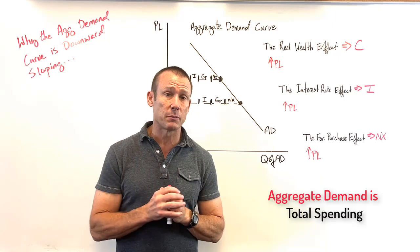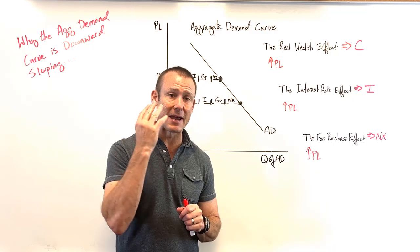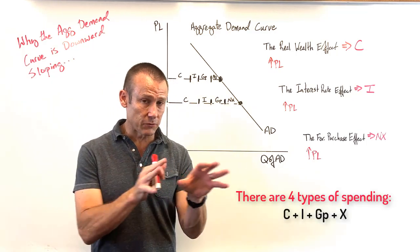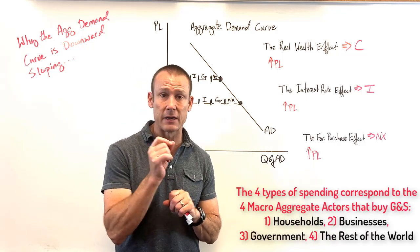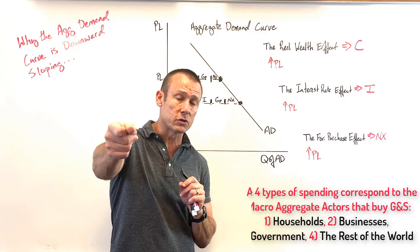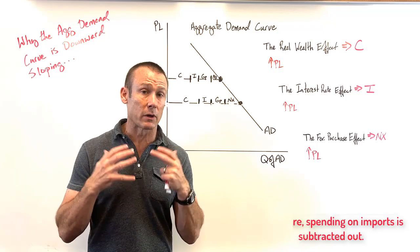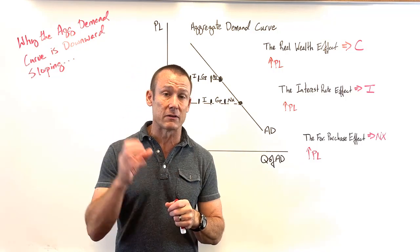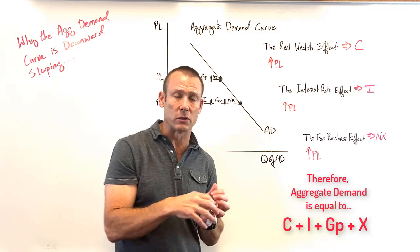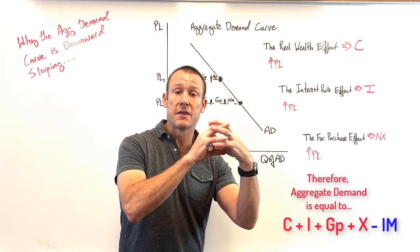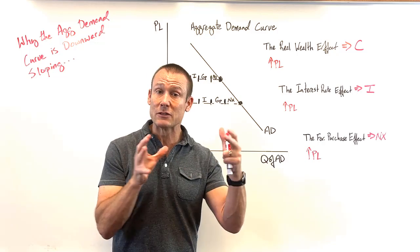There are four types of spending: consumption, investment, government purchases, and exports. When we calculate aggregate demand, we also subtract out any spending on imports because that was produced abroad. So aggregate demand equals consumption plus investment plus government purchases plus exports minus imports — and that exports minus imports we call net exports.